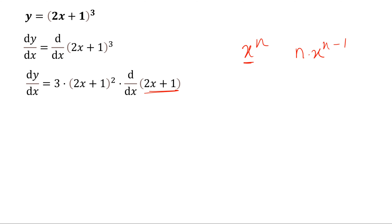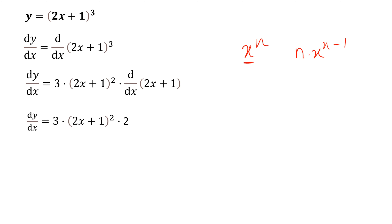Differentiating 2x plus 1: the derivative of 2x is 2 and the derivative of the constant is 0. So dy by dx equals to 3 times 2x plus 1 whole squared times 2. Since 3 times 2 is 6, the derivative is 6 times 2x plus 1 the whole squared.